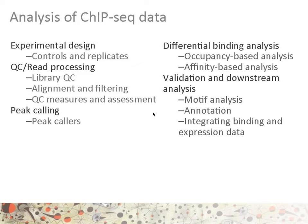Afterwards, quality check measures and assessments will be performed to ensure that all the data is as it should be. This will be subsequently followed by identifying regions which have a significant enrichment over noise, and this is done by identifying so-called peaks using tools called peak callers. Once one has identified peaks, one can perform various types of downstream analysis.